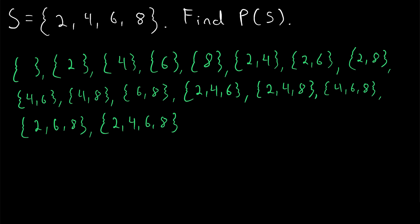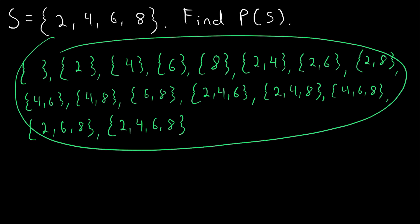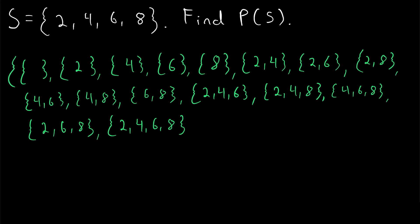To make sure we've got them all: S has four elements, so it should have two to the power of four subsets, which is equal to sixteen. We count all sixteen subsets — beautiful, we got them all. We just have to close this list in brackets to complete our power set. That is the power set of S, with all of its beautiful sixteen elements.